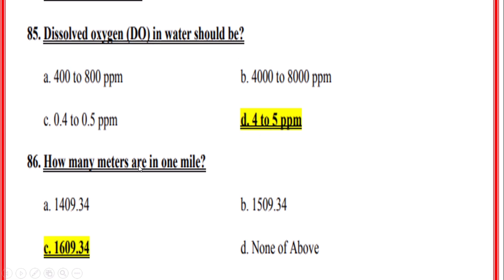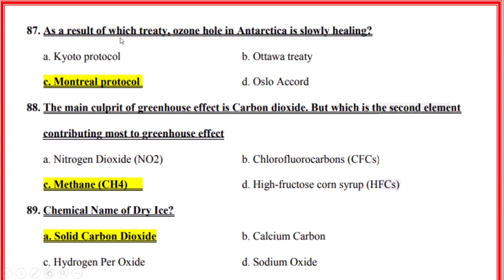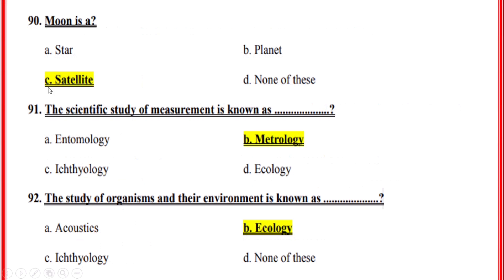How many meters are in one mile? Correct option C — 1609.35 meters. As a result of which treaty is the ozone hole slowly healing? Correct option C. Chemical formula of methane is CH4. Chemical name of dry ice — correct option C — solid carbon dioxide. Moon is a — correct option C — satellite.